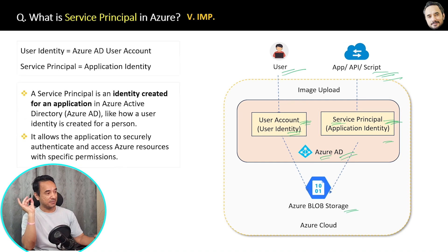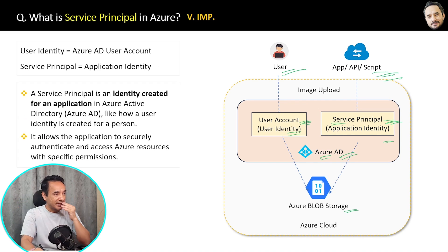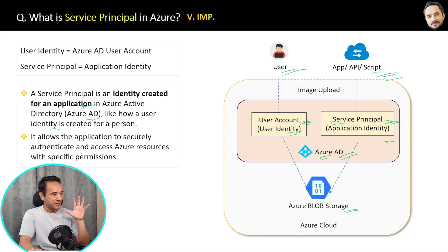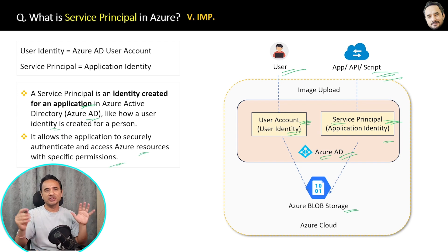Here is a simple and easy-to-remember definition: A service principal is an identity created for an application in Azure Active Directory, just like how a user identity is created for a person. It allows the application to securely authenticate and access Azure resources with specific permissions.